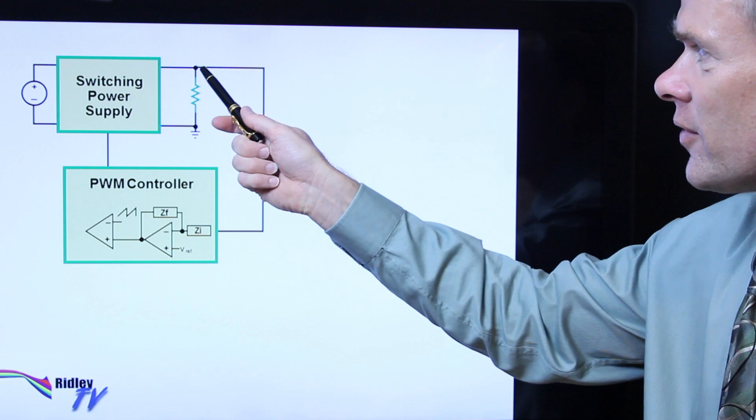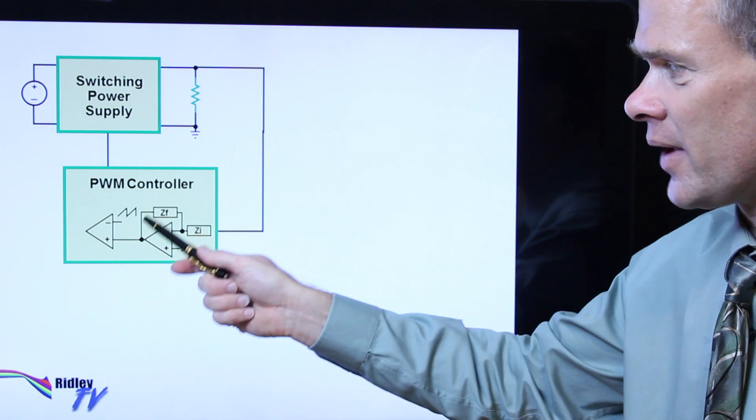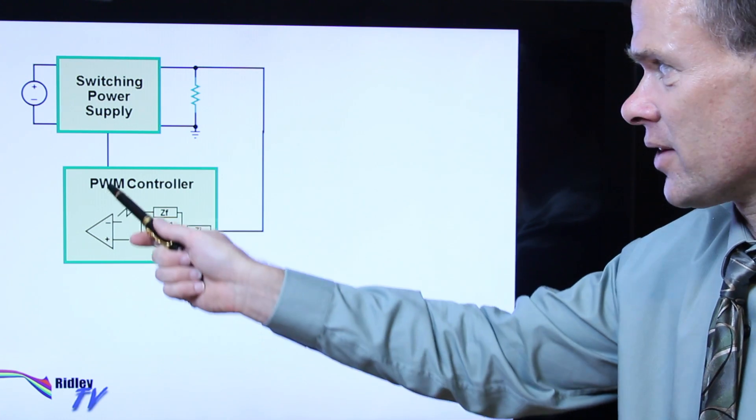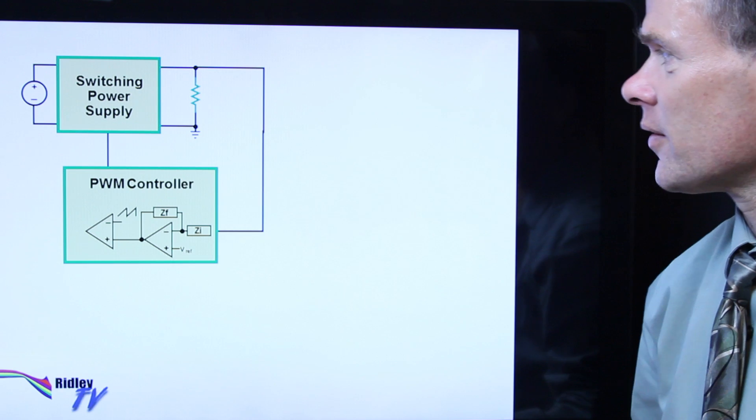So we take a sample of the output voltage, compare it to a reference, put it through an error amplifier that goes through the PWM comparator and generates the gate drive to our control FET of the system.